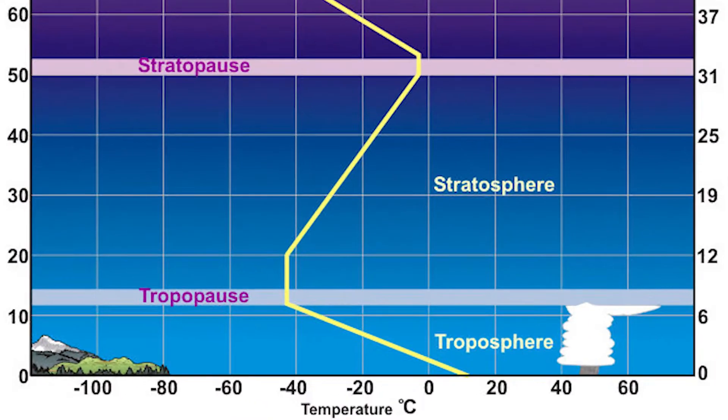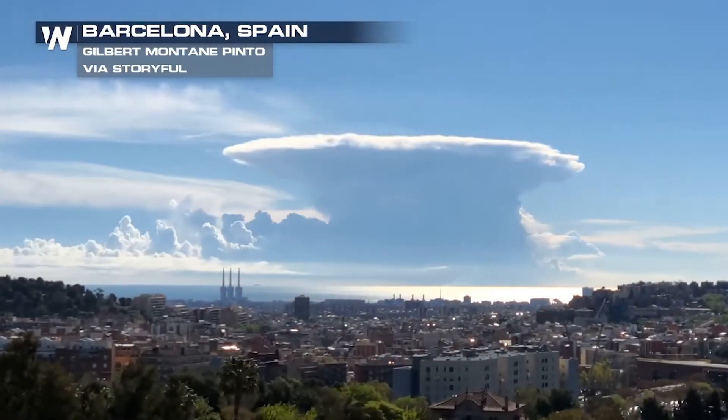I'm about to use the term 'air parcel' — that basically means I'm taking an imaginary cube of air in the atmosphere, labeling it, tracking where it goes, and figuring out its temperature and other atmospheric properties. The reason why a parcel of air that is warmer than the environment can rise is because it's less dense. Below the tropopause, temperatures decrease with height, so a warmer air parcel continues to rise because the environment keeps getting colder. But at the tropopause, the temperature stays the same with height, so the air parcel eventually cools to match the surrounding temperature and stops rising. That's why the top of a very large cumulonimbus cloud spreads out like an anvil.